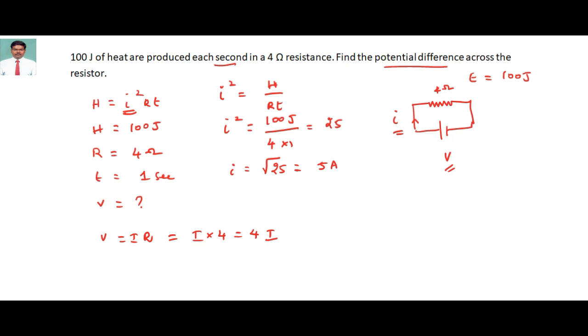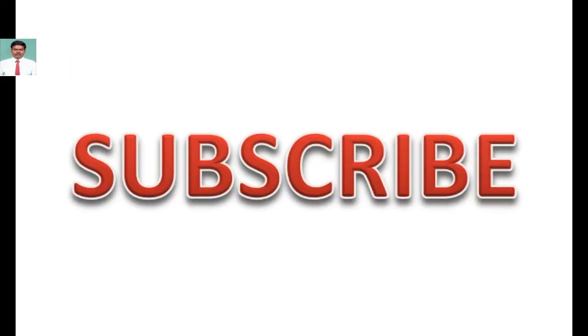If I substitute the I value here, that equals 4 times 5, which equals 20 volts. So the potential difference across the resistance is 20 volts.